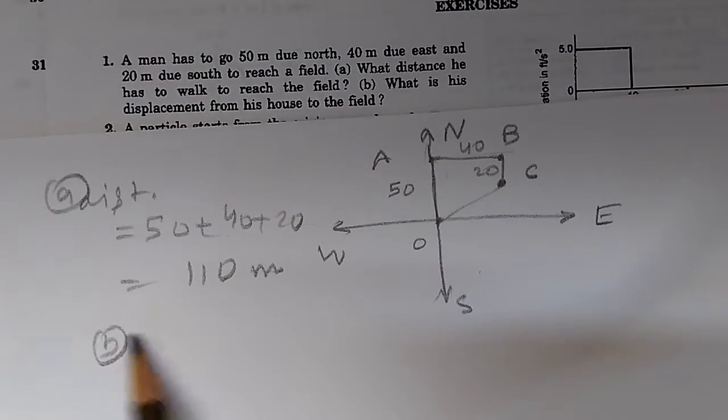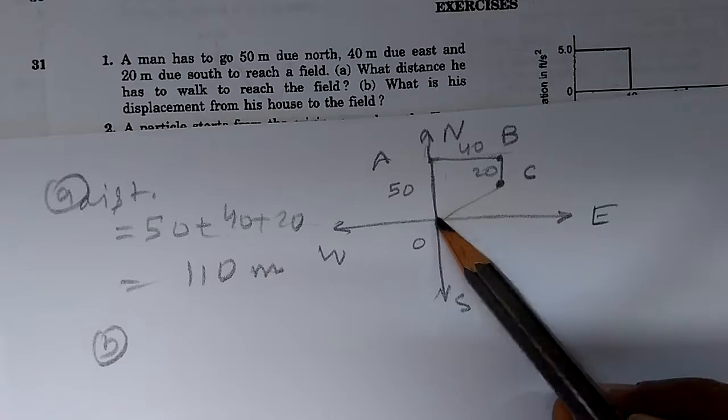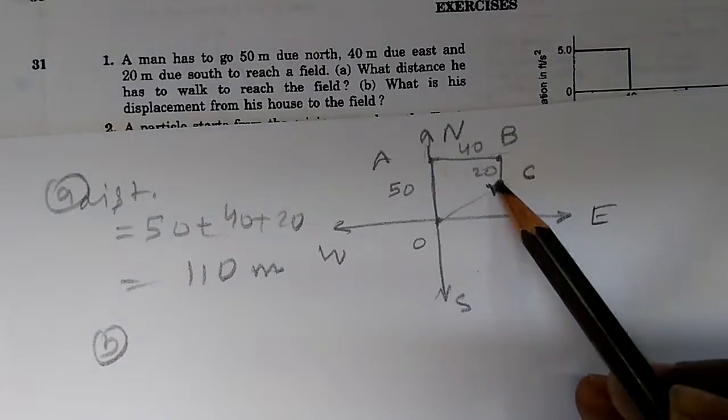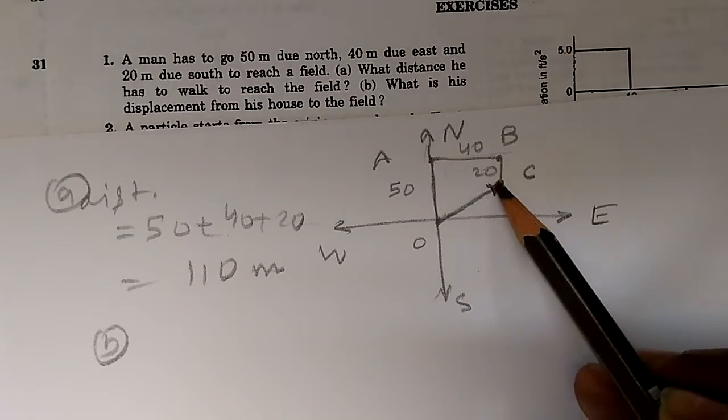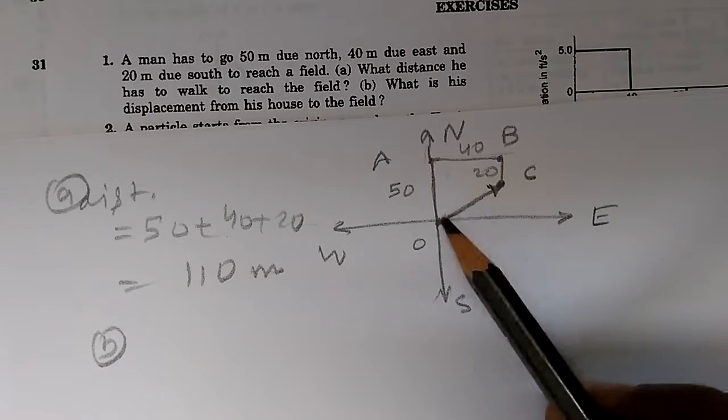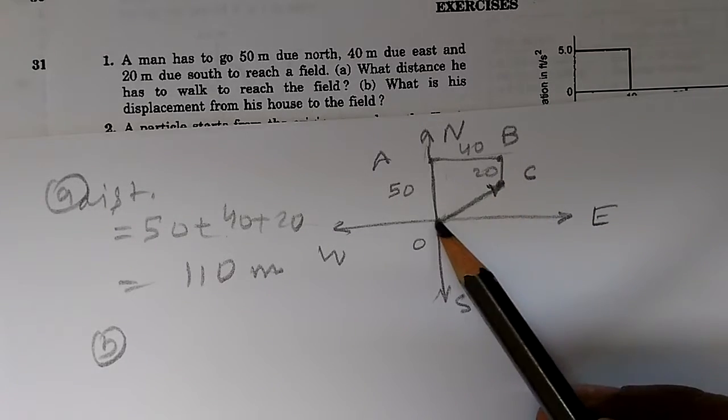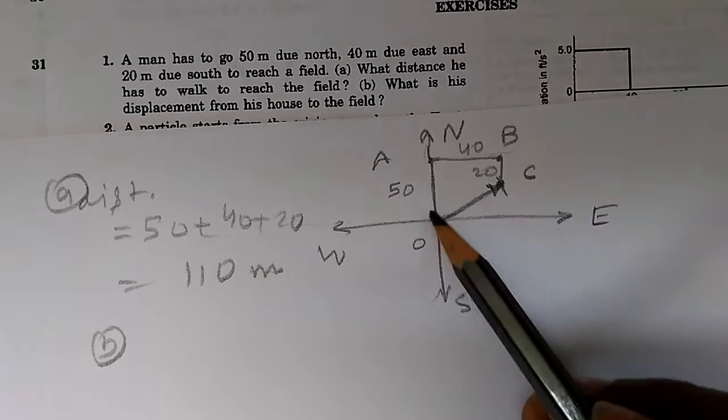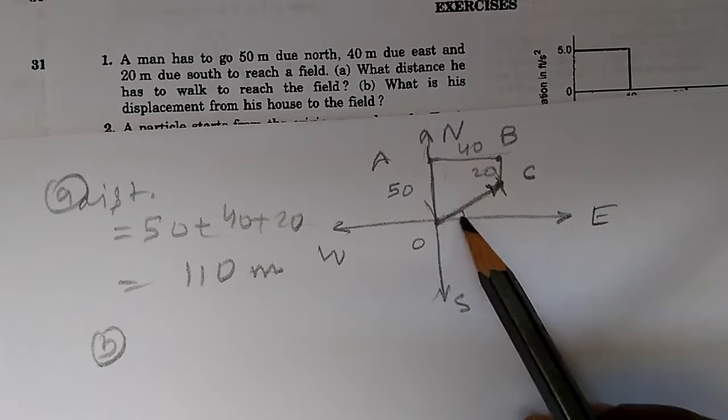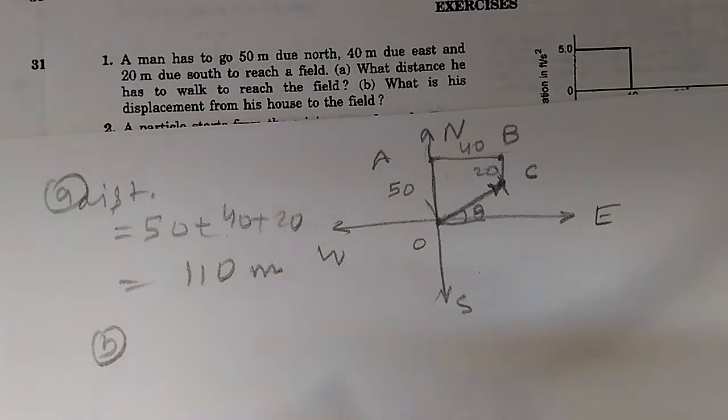In part B, we need to find out the displacement. Displacement is finally this position from this point O, he is at C, and this is the vector quantity. Displacement is the vector quantity. Its magnitude is this length, and its direction is an angle theta like this.